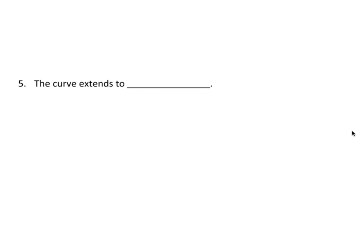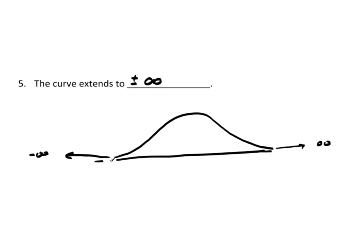Now, the actual curve extends to plus and minus infinity. In other words, when I draw this curve out, we stop it like this. But in reality, this tail goes on and on and on out to positive infinity. And it never ever touches the horizontal axis. There's always a little gap there.